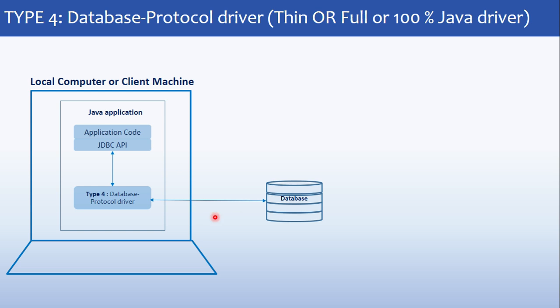You might have observed that there is no intermediate between your Type 4 database protocol driver and your database server. As we have seen in the previous drivers, there was something between Type 1, Type 2, and Type 3 drivers — some component to communicate with the database. But here there is no such component, and that's why it is called a thin driver. The layer between your Type 4 driver and database is a thin layer, whereas in previous drivers there is a thick layer.